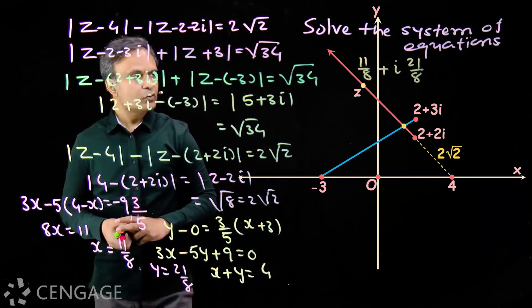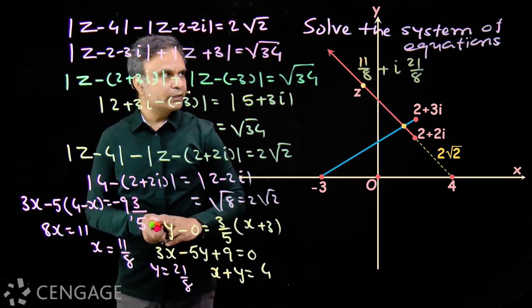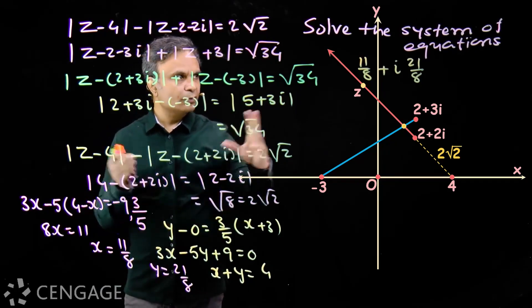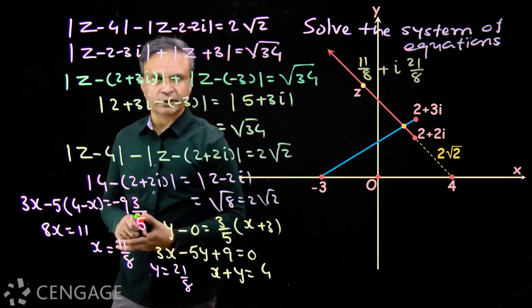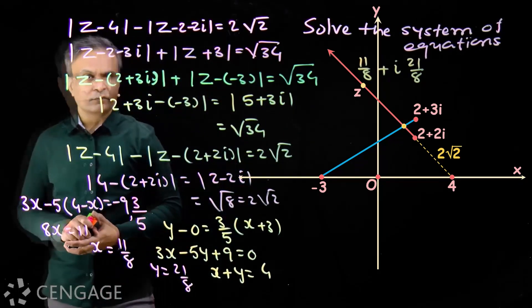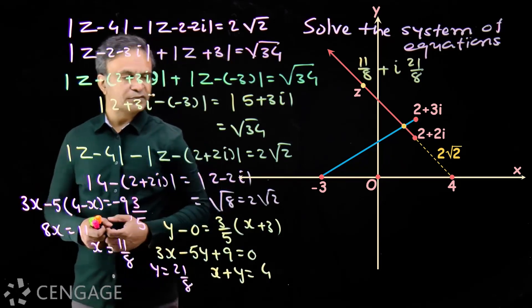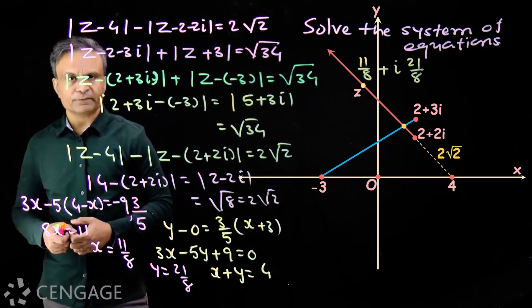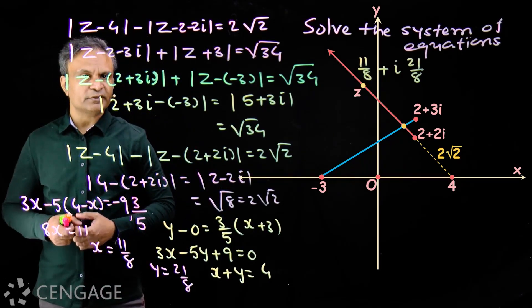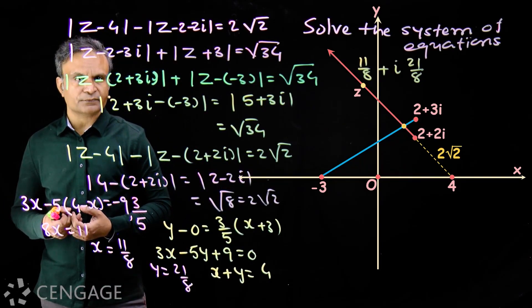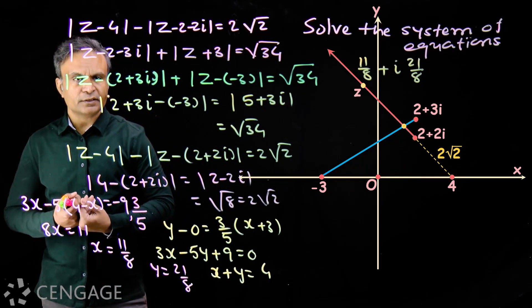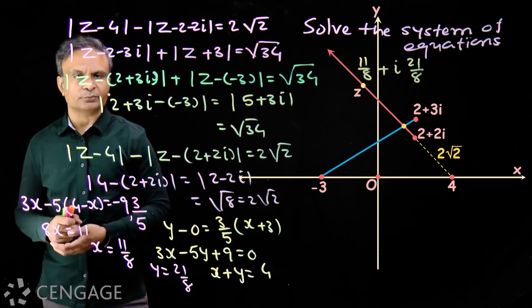We are using a good combination: first identifying the locus using complex numbers, and then solving the equations in Cartesian form.